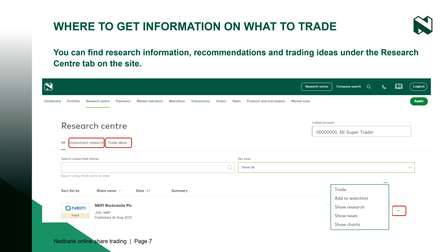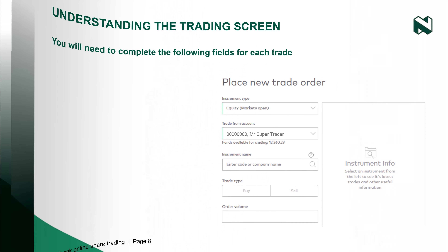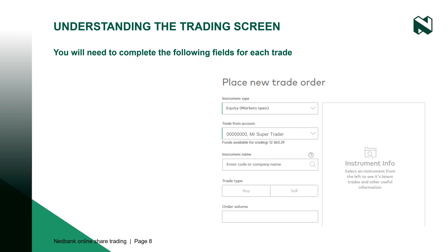A buy limit order can be executed only at the limit price or lower, and a sell limit order can be executed only at the limit price or higher. A limit order is not guaranteed to be executed.